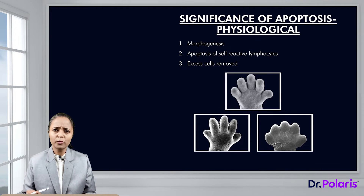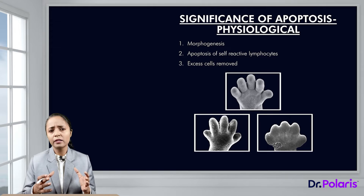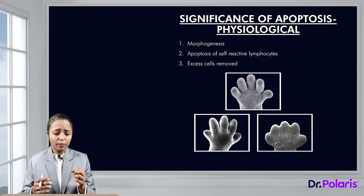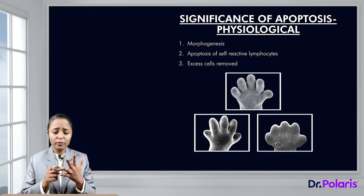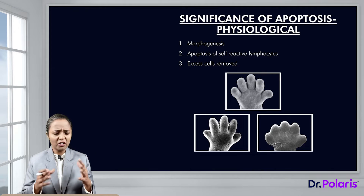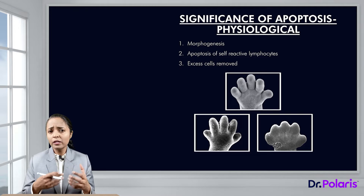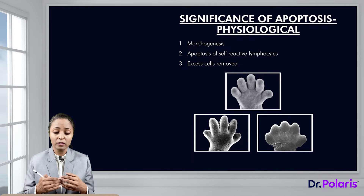Apoptosis is a physiological process with significant physiological roles. During development, we are basically a mass of cells from which a contour has to be developed. For example, when we are born our hands are a mass of cells, and slowly the fingers have to be formed — the extra cells present between the fingers need to be removed by apoptosis. Similarly, during brain development there are many neurons, and as connections between neurons form, many neurons die in the process. This is the significance of apoptosis during development.